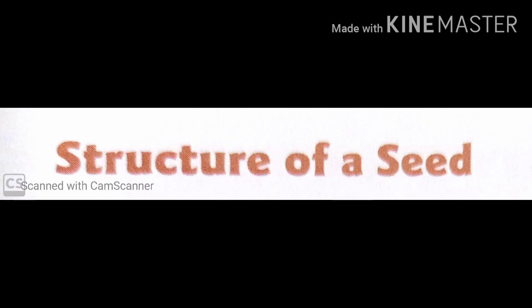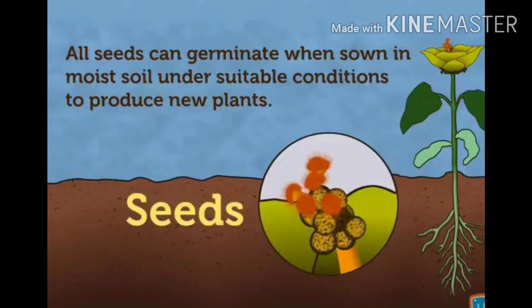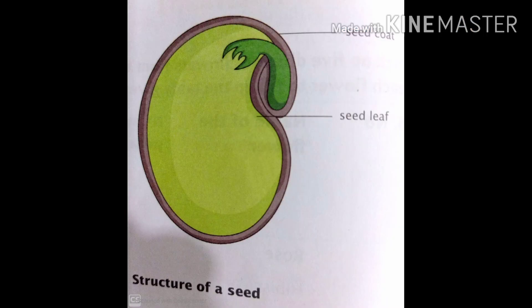Structure of a seed. Plants reproduce by producing seeds, and seeds grow into new plants. The parts of a seed are: 1) seed coat, 2) seed leaves, and 3) embryo. Starting with seed coat.